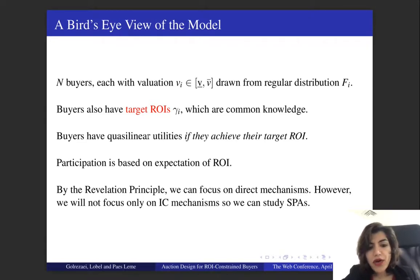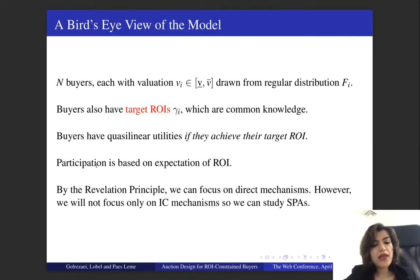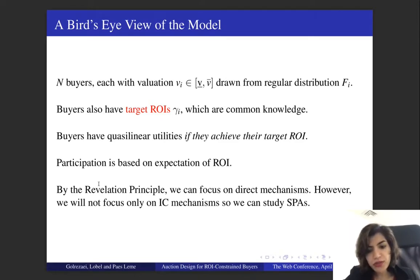Buyers have quasi-linear utilities only if they achieve their target ROI. When it comes to participation, buyers will participate if their expected ROI is greater than or equal to their target ROI. Moving forward, in this talk I'm going to focus on direct mechanisms, which is without loss of generality by the revelation principle.